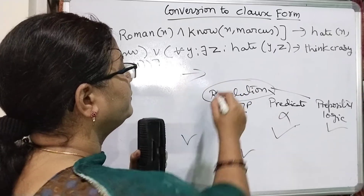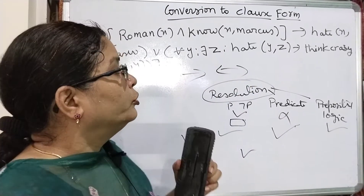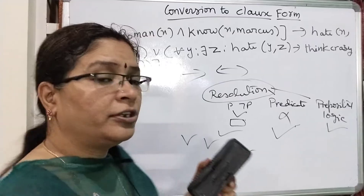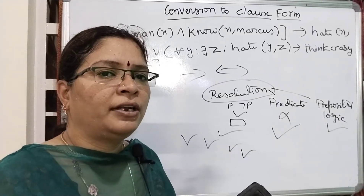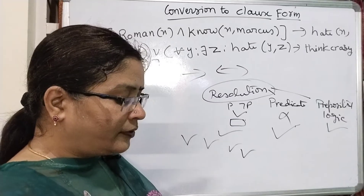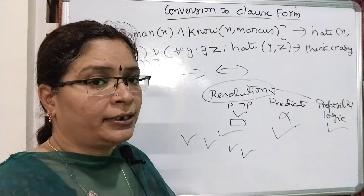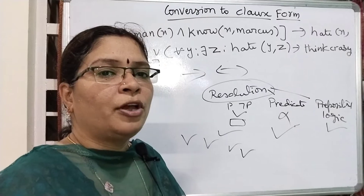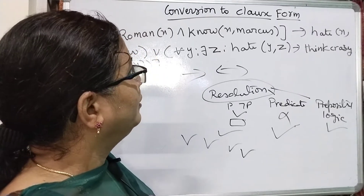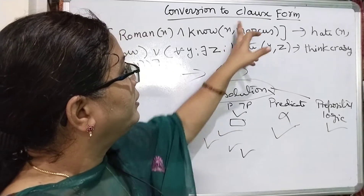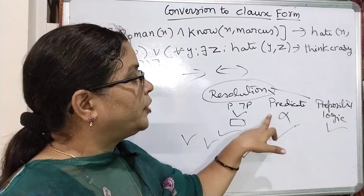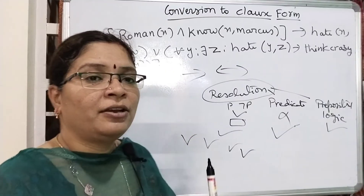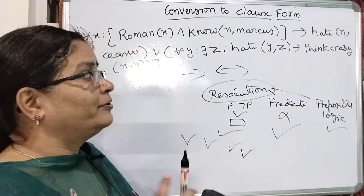The clause form can contain implications, and sometimes biconditionals as well. This complex form will be converted into the clause form — also called horn form, clause form, or disjunctive normal form. We do this conversion while working with resolution. In previous videos we covered resolution in propositional logic; now we are discussing how to convert into clause form before going to predicate logic resolution in the next video.